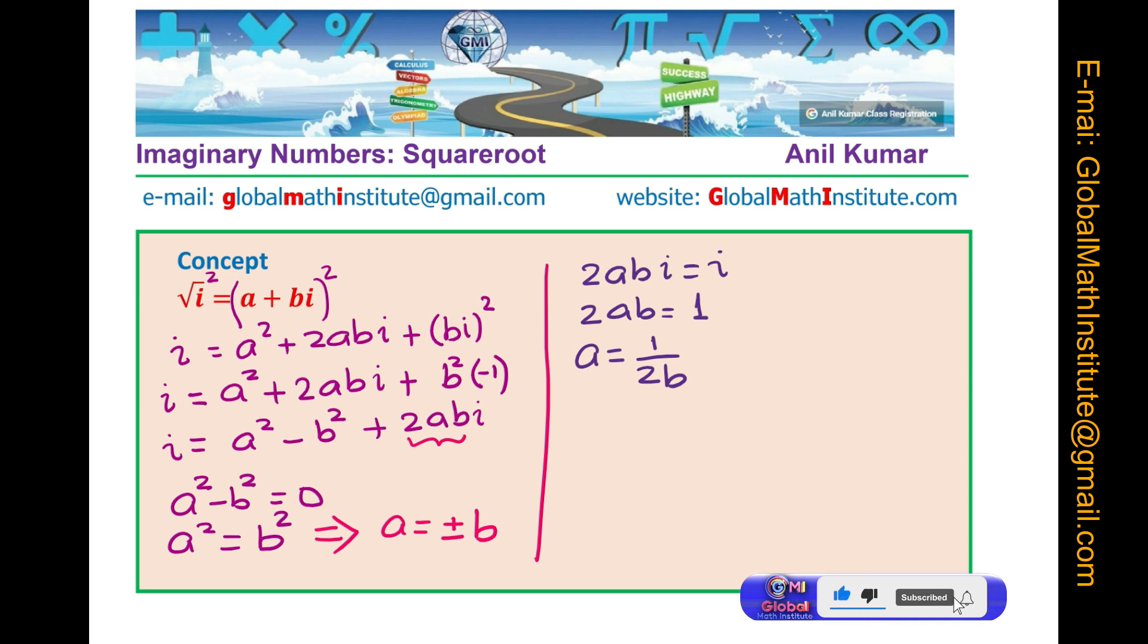So, we have a equals to 1 over 2b from this equation. And earlier, we have a equals to plus or minus b. Now, these two equations should help us find a solution. So, two equations, two unknowns. So, what we can do? We can now imagine that let us take a equals to 1 over 2b and then see how it works out.